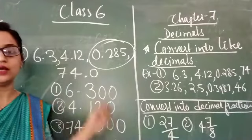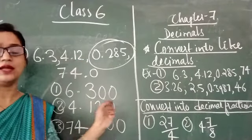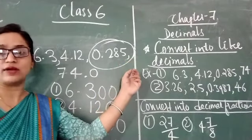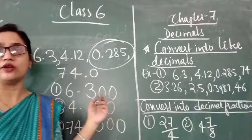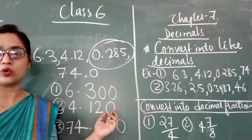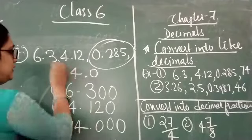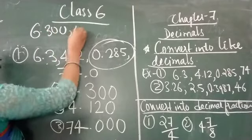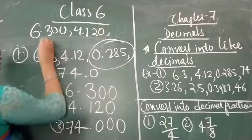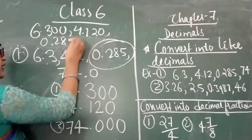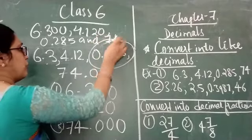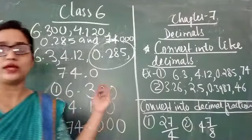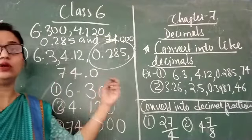So here we have converted these unlike decimals into like decimals by putting zeros according to the maximum number of decimal place values already given in one of the decimal numbers. Our answer is: 6.300, 4.120, 0.285, and 74.000.